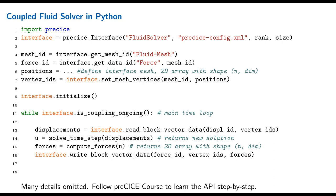We solve one time step, get a new solution, and from it compute forces. Those forces are a 2D array with shape (number of vertices × dimensions), and we write them to preCICE. Then we come to the most important function: advance. In advance we tell preCICE we are done with the time step and want to advance to the next one. Within advance, all the things we discussed happen: preCICE communicates data, computes data mapping between meshes, computes quasi-Newton acceleration, and more.